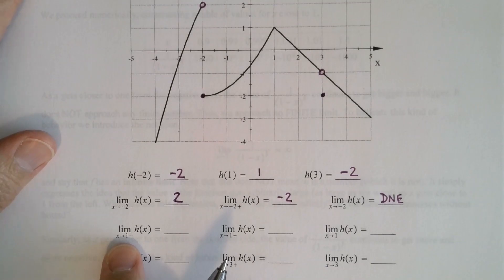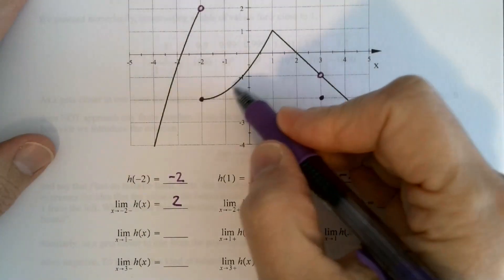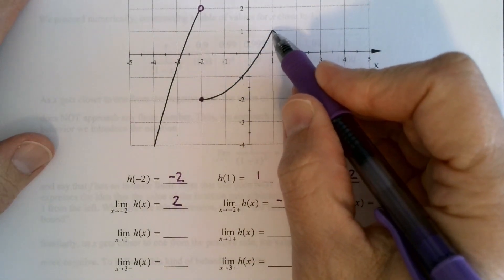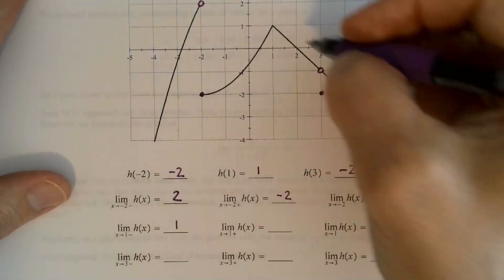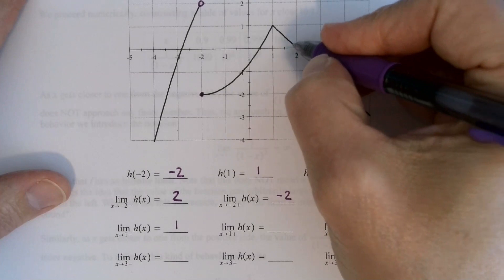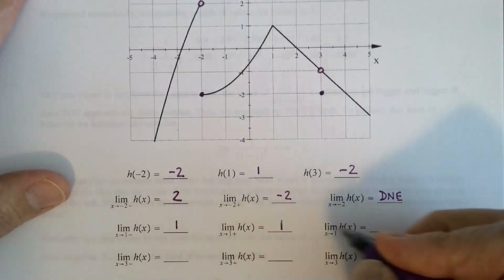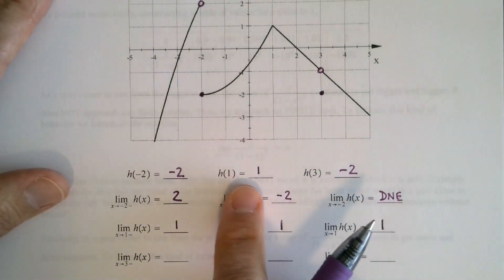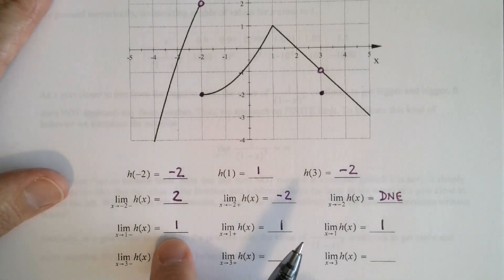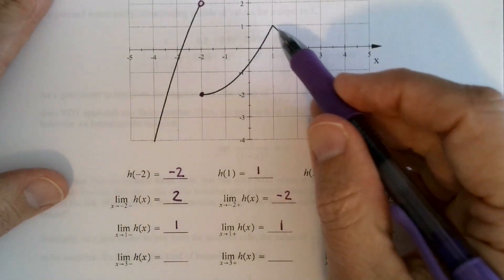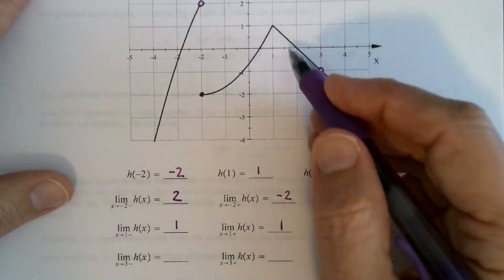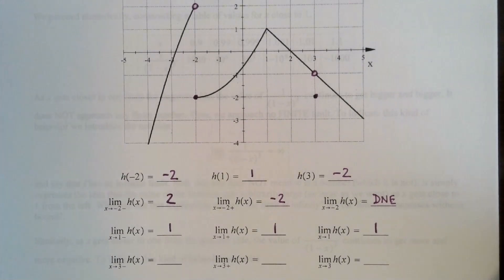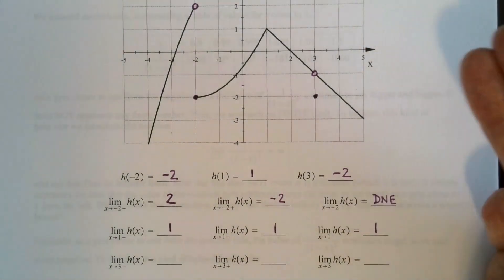Let's look at x = 1. As x approaches 1 from the left, we move up this curve going right to that point — the limit is 1 from the left. From the right, as x approaches 1 from the right, we're going right to that same point. Therefore the limit as x approaches 1 of h of x is equal to 1. The value of the function is 1 and the limit is 1 — there's no hole or gap. There's a little sharp turn, but as far as limits go, we don't have to guess.